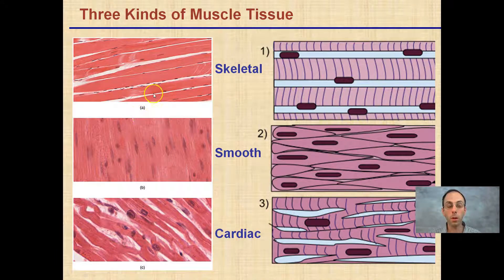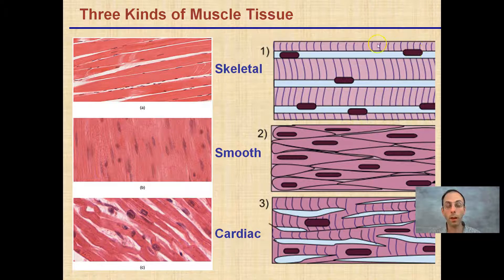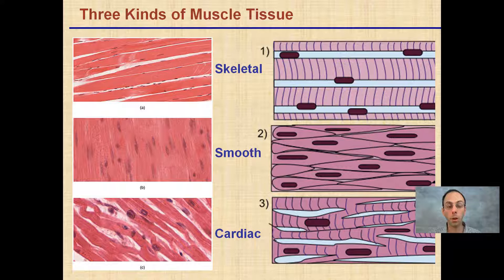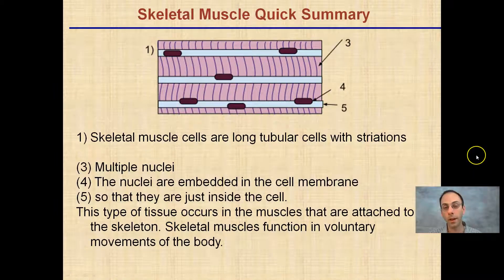This is a zoomed-in view of how each muscle type looks on a microscope slide, along with a cartoon rendition highlighting certain features. Here is smooth muscle and a zoomed-in version of that, and here is cardiac muscle. Being able to distinguish the characteristics of all three and visually identify them would be advised.